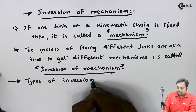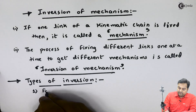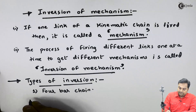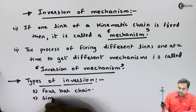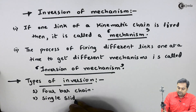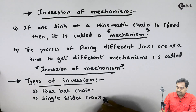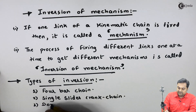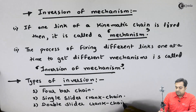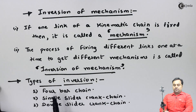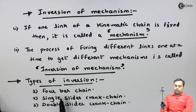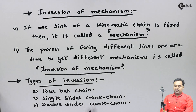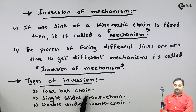The types of inversion are: first, inversion of 4-bar chain; second, inversion of single slider crank chain; and third, inversion of double slider crank chain. In the 4-bar chain we get different inversions by fixing different links. Let us start with the 4-bar chain first.